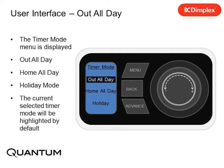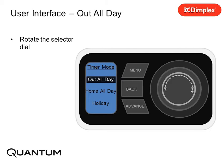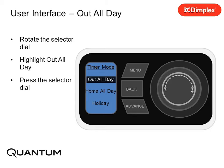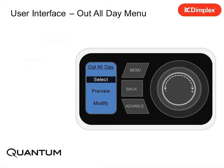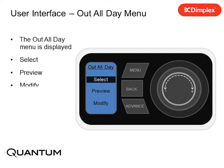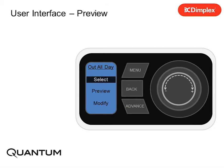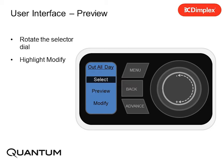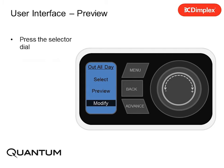The timer mode menu is displayed. The current selected timer mode will be highlighted by default. Rotate the selector dial to highlight Out All Day and press the selector dial. The Out All Day menu is displayed, with Select highlighted by default. Rotate the selector dial to highlight Modify and press the selector dial.